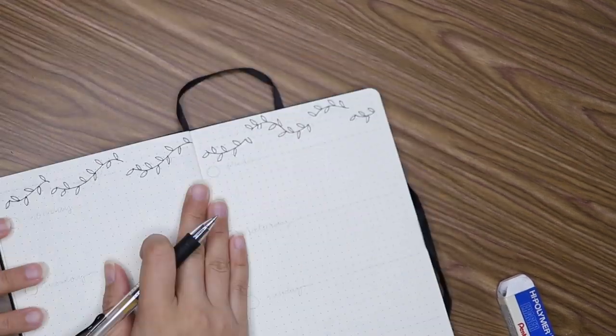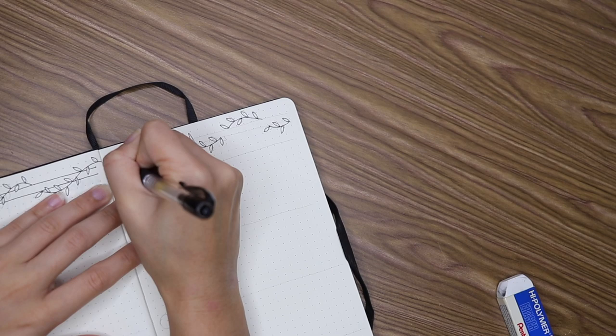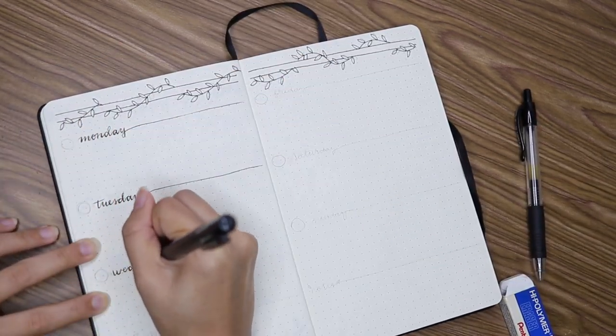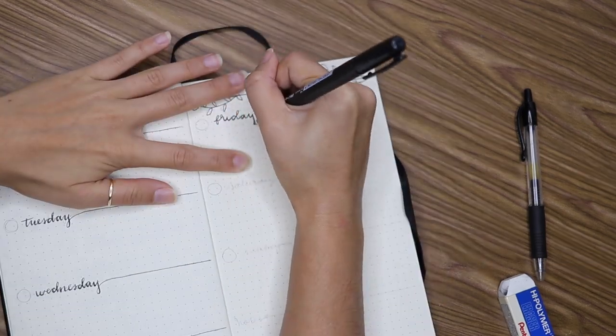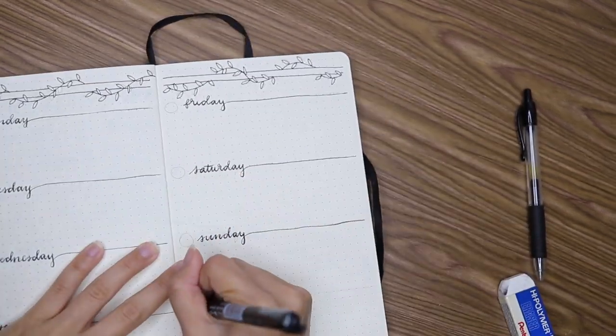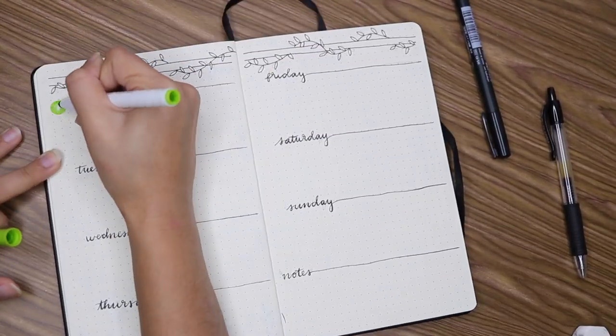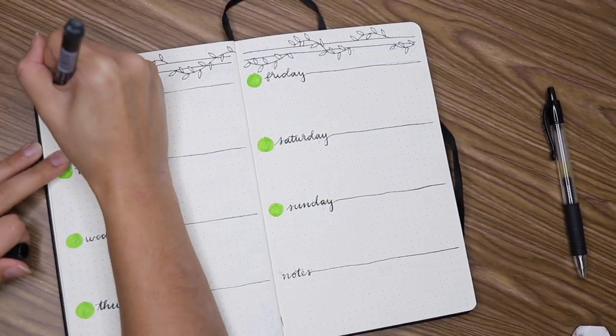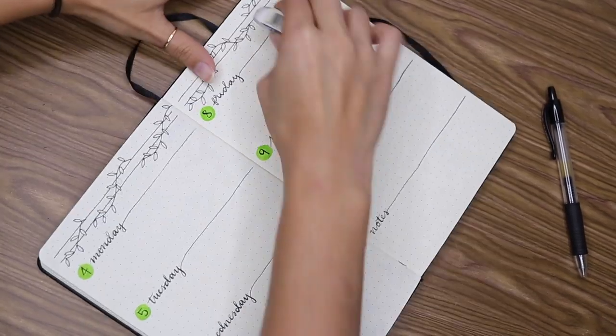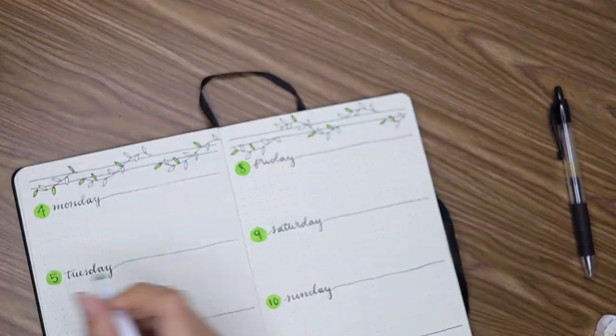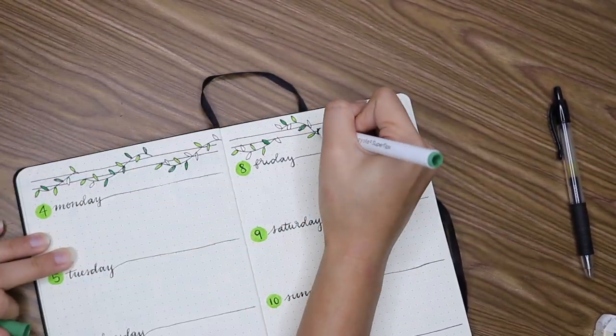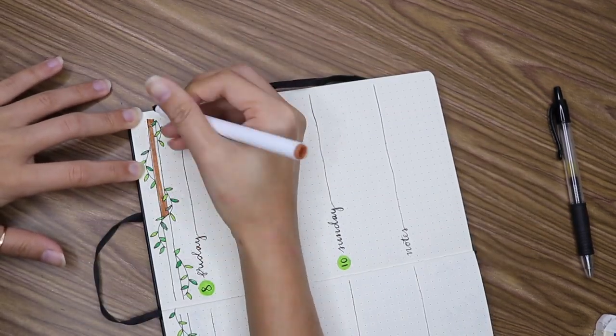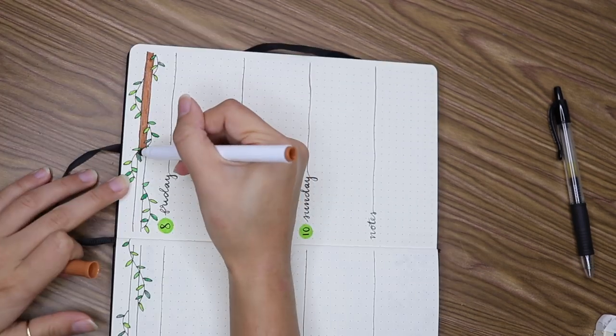Alright, so now we have our final spread which is our first weekly spread for March. I added a vine doodle at the top again, but this time I made it look like it's being wrapped around a branch or just some type of long piece of wood. I don't even know, but I like how it turned out. And I'm using a horizontal layout again because I don't know, I just like how these look and they work really well for me, more than the vertical layouts I think. Plus I love the minimal look to this one.